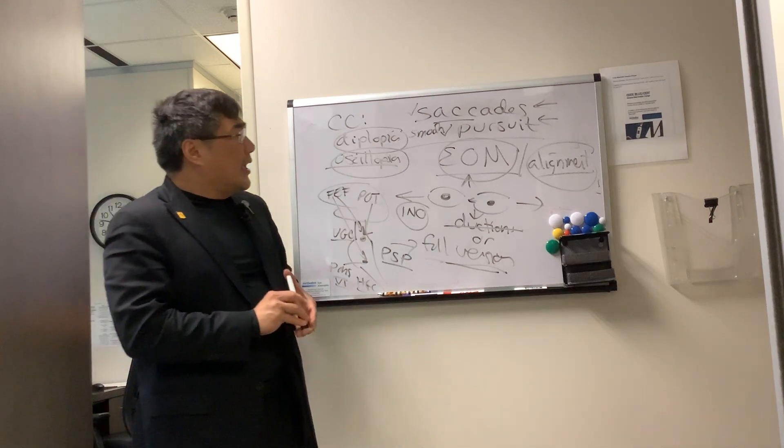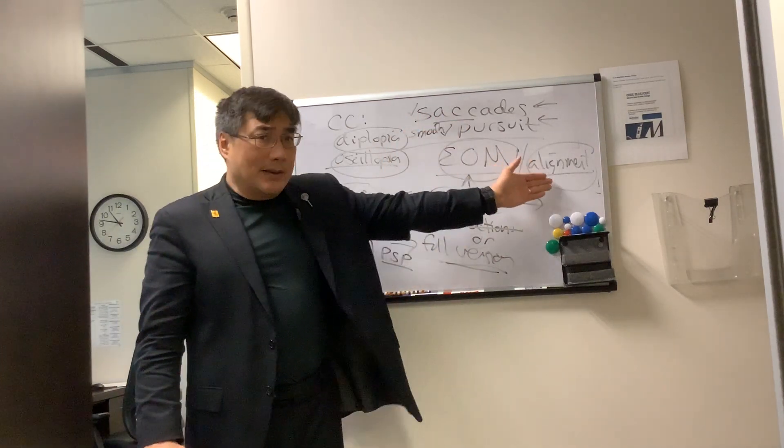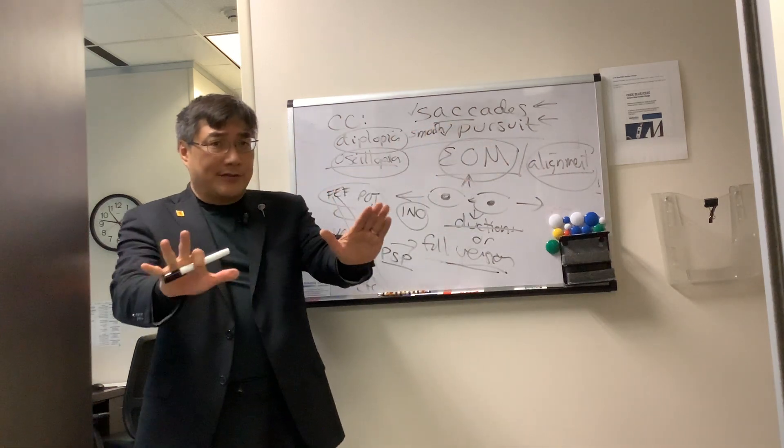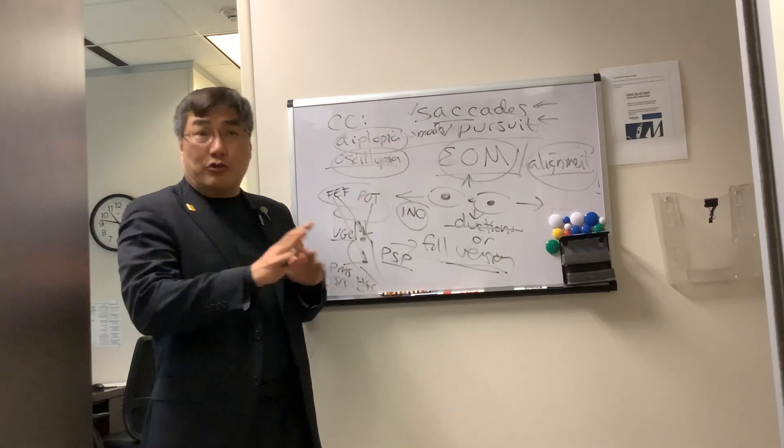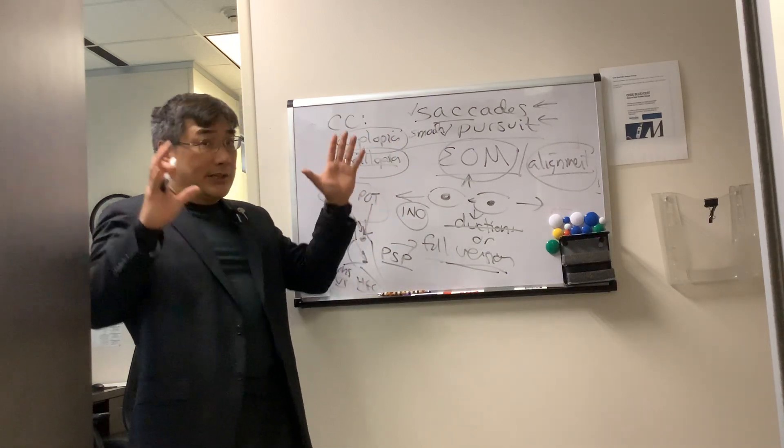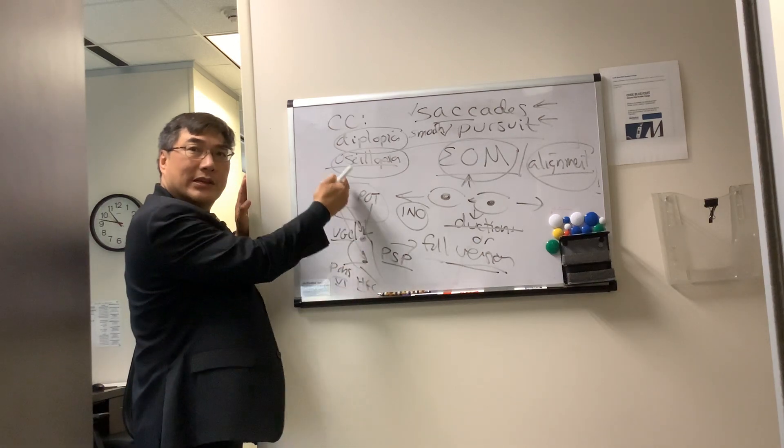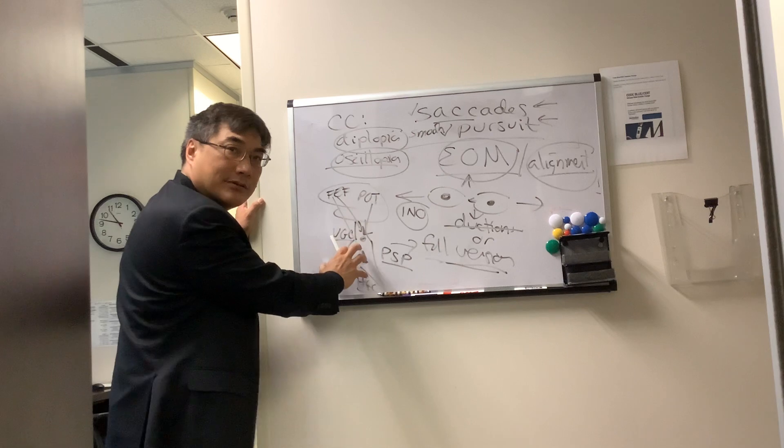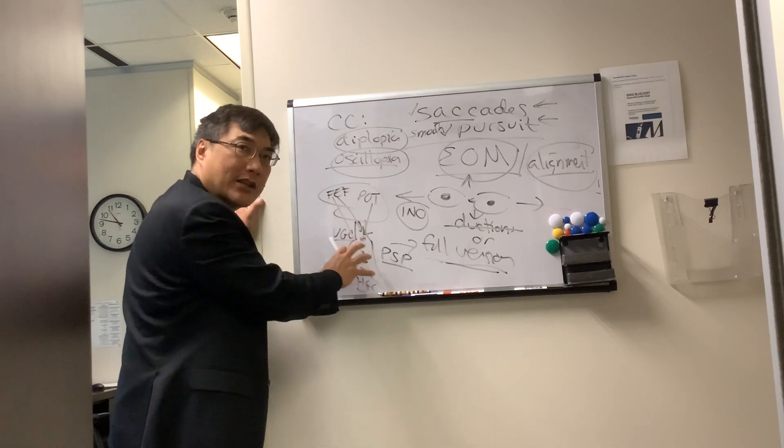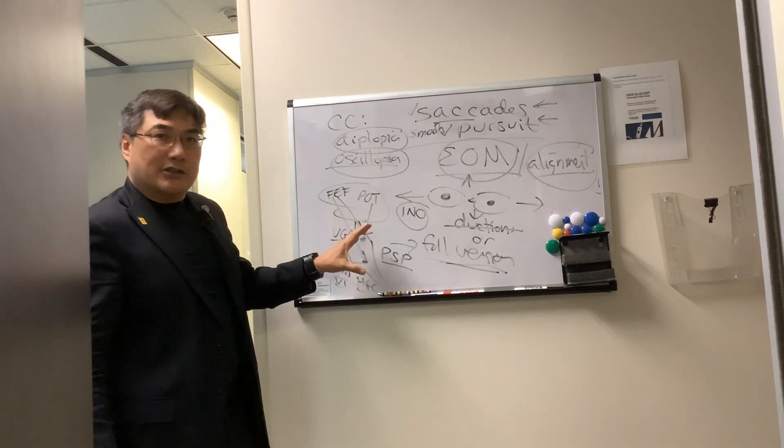So there are clearly some things where the versions and the alignment with the cover test are not enough. And you must test the saccades and the pursuit. You're going to use words to describe what you saw. And then you're going to put it into a bigger context to determine where along the network you think is the problem. But the finding by itself is not localizing. It just tells you, we got to look for the company it keeps so that we can try and define both an etiology and a localization.